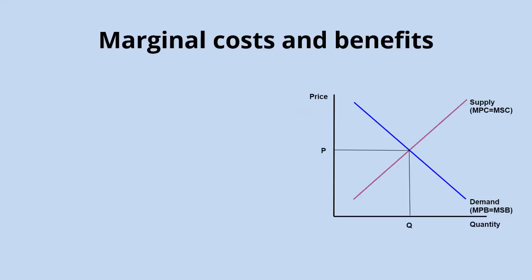This video builds on our year one work on externalities by looking at marginal costs and benefits, and then also giving a bit more detail on the diagrams to show positive and negative externalities in production and consumption. For us to really understand the nature of externalities, we first need to be clear on what we mean by these marginal social and marginal private costs and benefits.